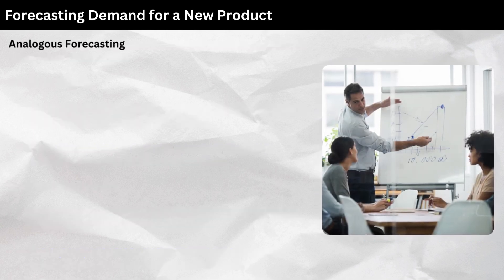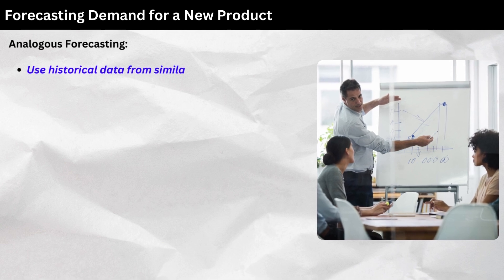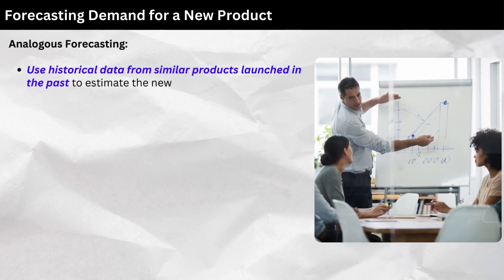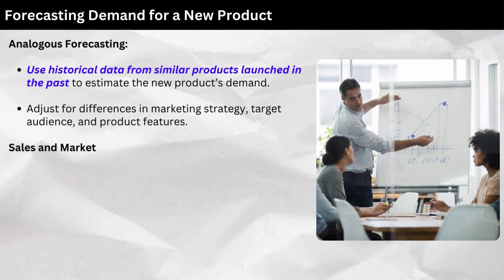Analogous Forecasting: Use historical data from similar products launched in the past to estimate the new product's demand. Adjust for differences in marketing strategy, target audience, and product features.